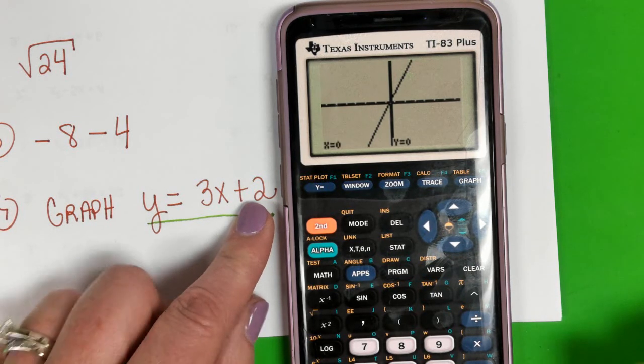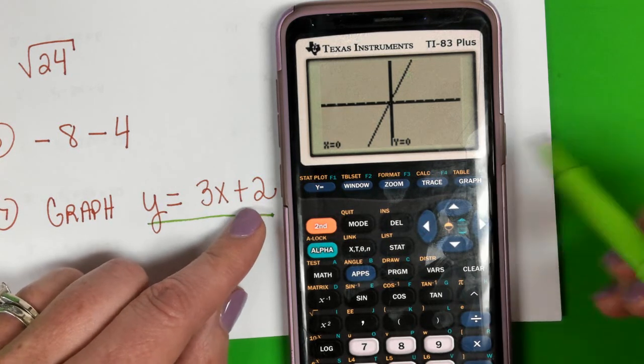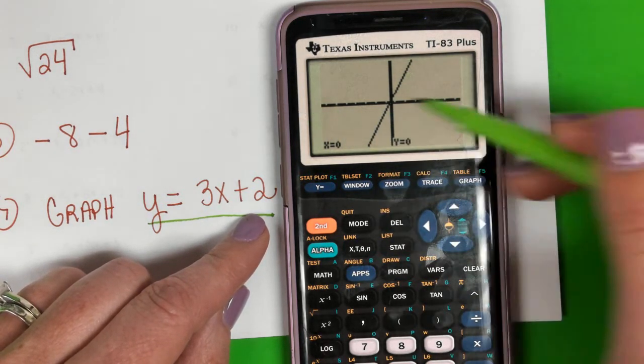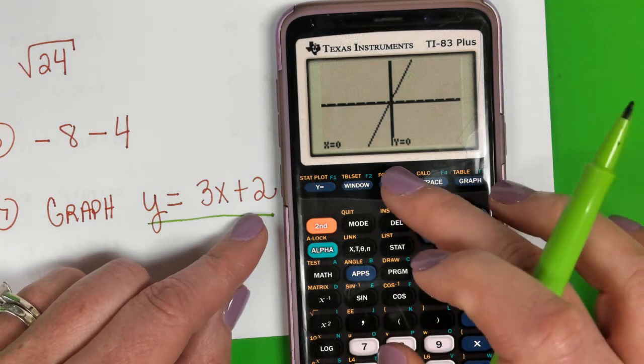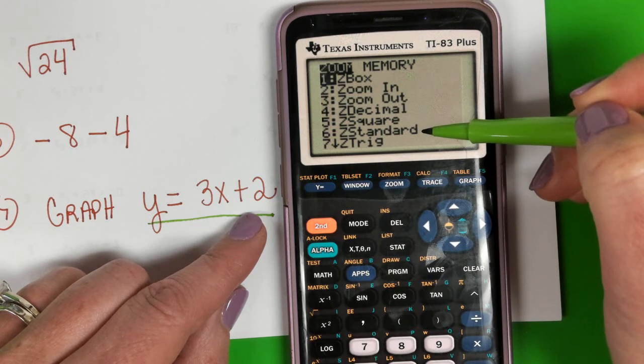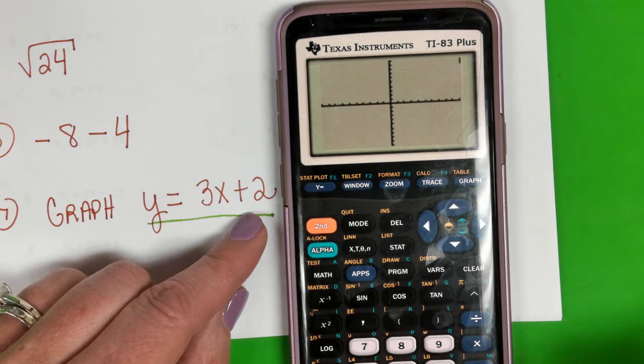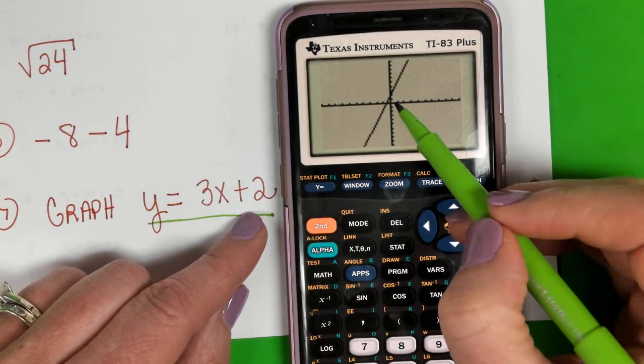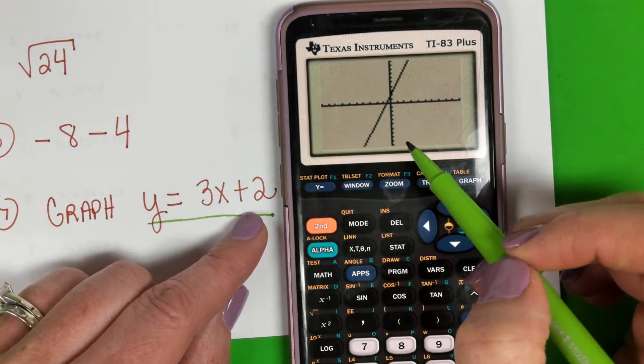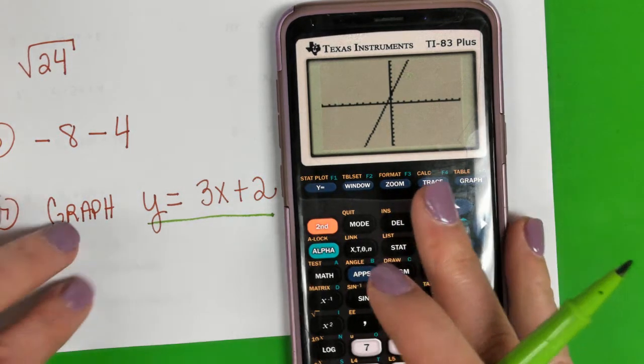Now let's say you wanted to go back to the coordinate plane that we saw from the beginning. I can hit zoom, and when it says standard, that gives you the standard window that we started with, which is basically 10 units each way.